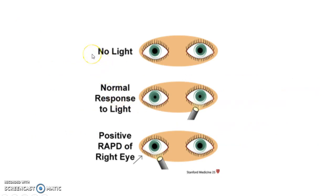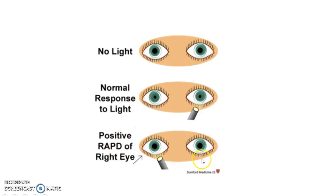In normal persons, when no light is shown, the pupils remain dilated. When a light is shone onto one eye, the pupils remain constricted. In case of RAPD in one eye, the pupils remain dilated when light is swung from the unaffected eye to the affected eye.